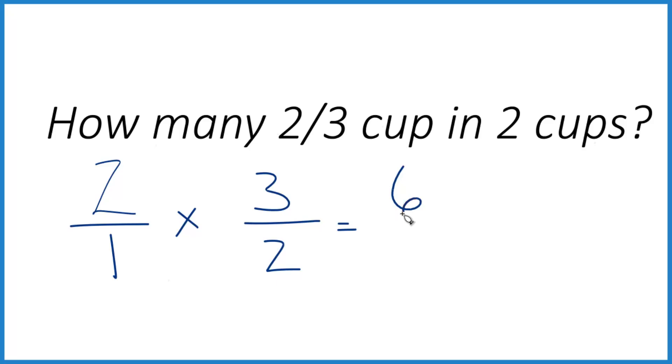Two times three is six. One times two is two, and you get six over two. Six divided by two is three. Three times two is six, right?